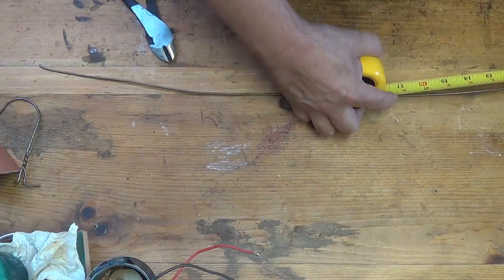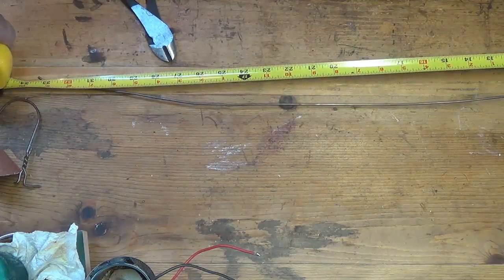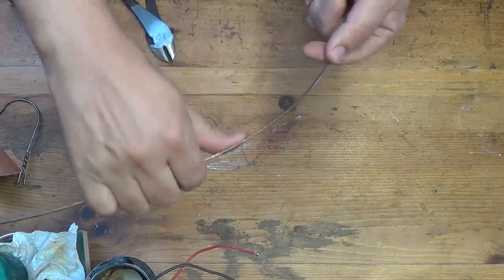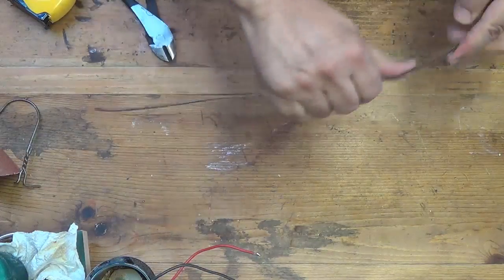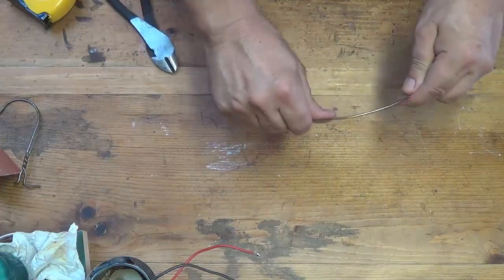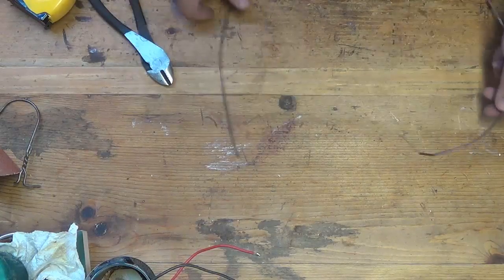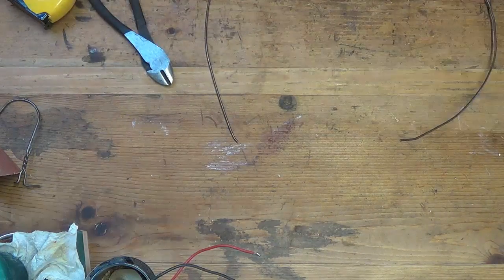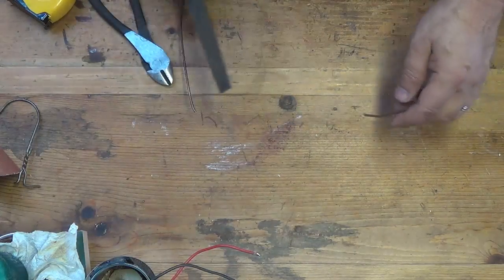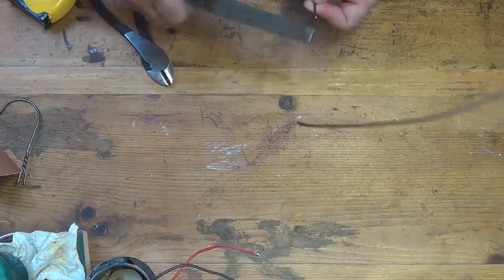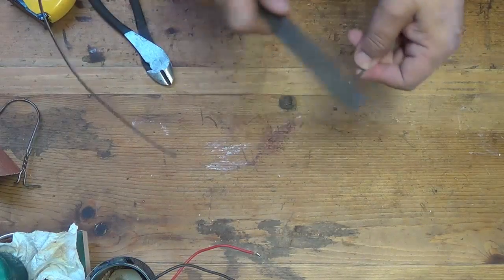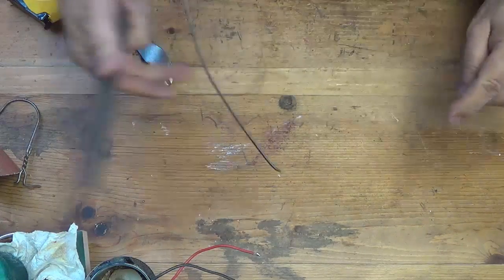And then with the tape measure go ahead and measure that and see how big it is. So this one is about 33 inches. Then once you've got it straight bend it into a hoop and try to make it as smooth as possible but it doesn't have to be perfect. And yeah another thing you might need is a file. So while you have the ends here be very careful with the ends. Keep them away from your face and eyes. And file off any sharp burrs. You'll be thankful later.